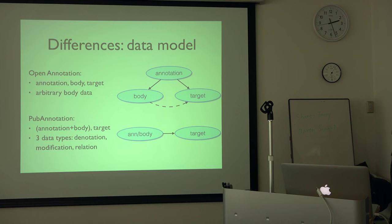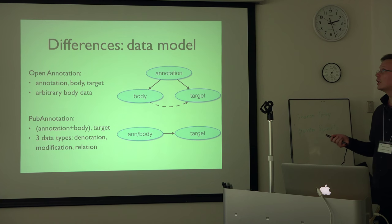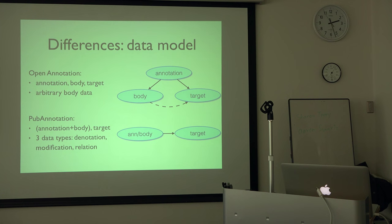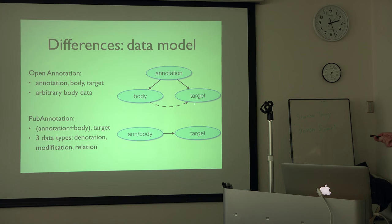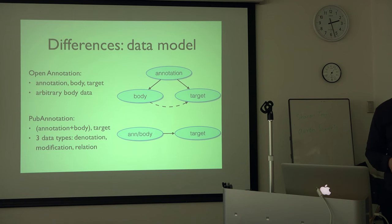I'll quickly go over the sorts of things that differ between pub annotation and open annotation. Open annotation adopts a fundamental abstract data model that differentiates between three things: the annotation, the annotation body — which is the data associated with the annotation — and the target, which is the thing being annotated, such as a span of text. The body could be, for example, a label. This separation allows independent tracking of metadata for the annotation and the associated data, as well as annotation of things with bodies not under your control — for example, saying a Wikipedia page is the body of my annotation for this thing.